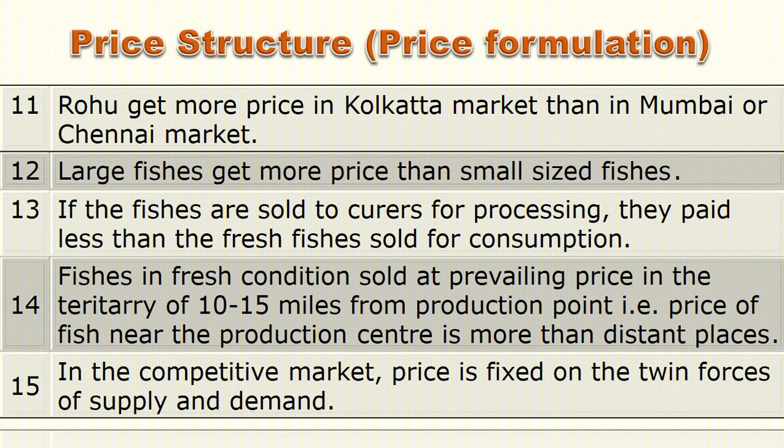Large fishes get a higher price than small-size fishes. Live fish species have a higher price because they are kept in the market in live condition, attracting customers. Examples of live fish are Channa fish and Clarias batrachus. Distance between production centers and consumption centers is also an important factor — fish sold fresh near the production center within 10 to 15 kilometers commands a higher price than at distant places.